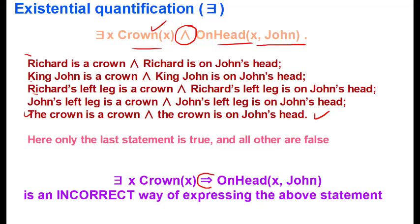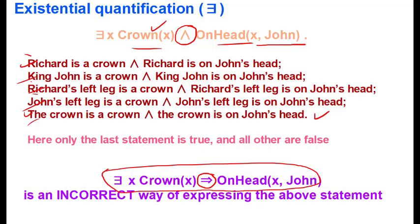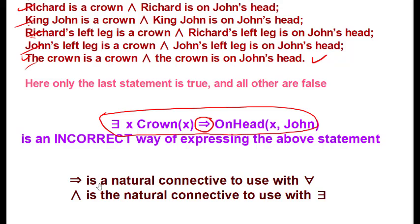If we used implication instead of AND with the existential quantifier, all the sentences would become true, which is wrong. So the conclusion is: implication is the natural connective to use with the universal quantifier (∀), and AND is the natural connective to use with the existential quantifier (∃). That's all for this lecture; we will continue this topic in the next lecture. Thanks for watching.